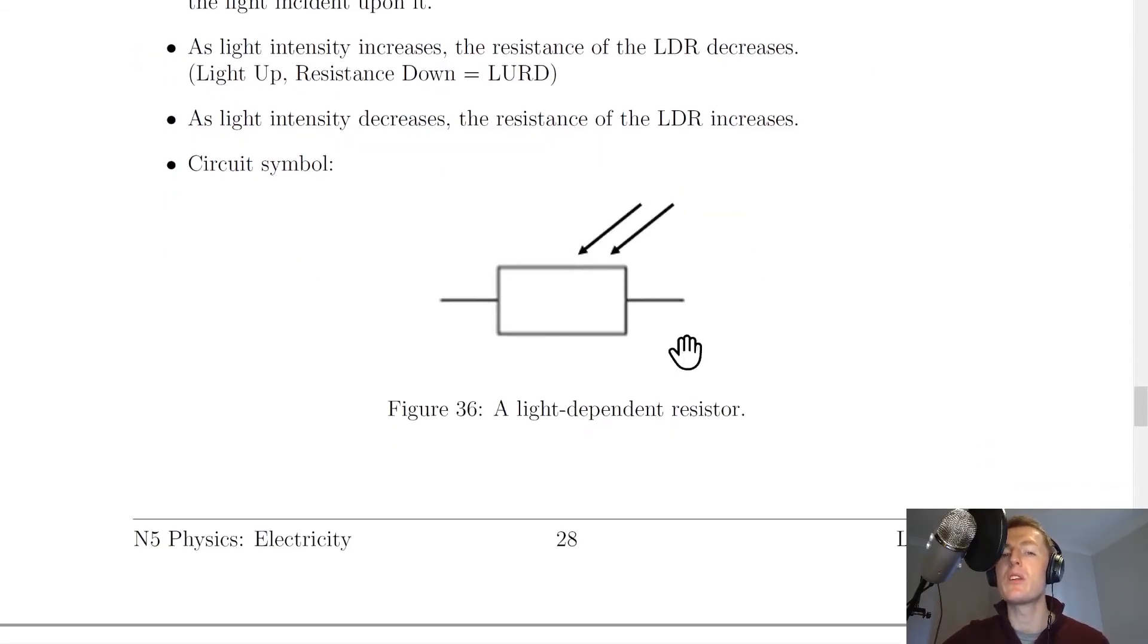This is the circuit symbol here for the LDR, where we've got our normal resistor with two arrows pointing in towards the resistor. And those two arrows represent the light coming in.